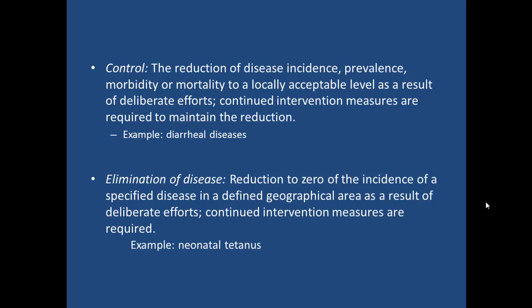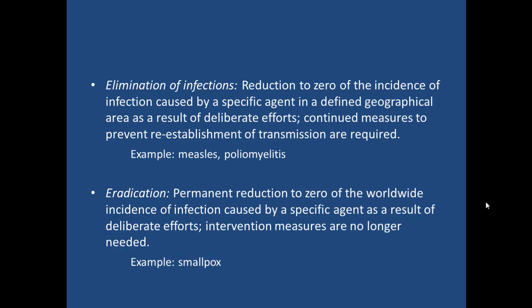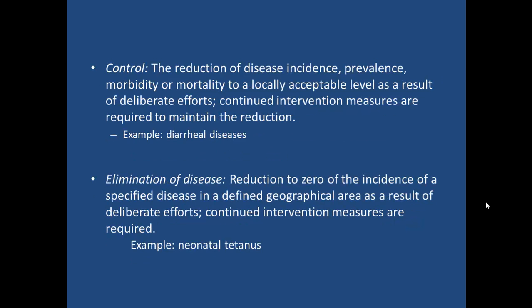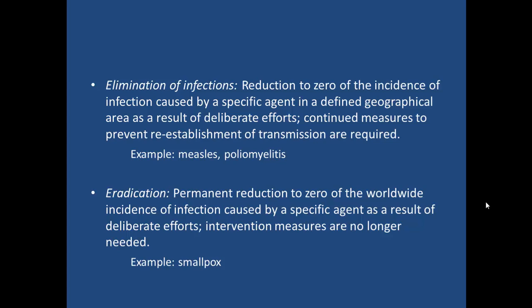They're even starting to talk about eradication, which we'll get into in just a second. Elimination of infection is the reduction to zero incidence by a specific agent in a geographical area. As a difference to elimination of disease — using lymphatic filariasis or elephantiasis as the example — you can reduce the disease manifestation, but people may still get infected. Another good example is blinding trachoma. However, in many situations you actually have to get rid of the infectious agent from the body completely, and this is elimination of infection.